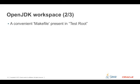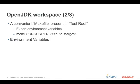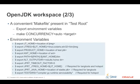In addition to invoking the jtreg command directly to execute tests, there is a convenient Makefile present in each test root directory. To execute tests using the Makefile, export the necessary environment variables and then execute make with CONCURRENCY=auto and the desired Makefile target. Some general environment variables are required; many more are available, and the best place to learn them is to look at the Makefile itself.